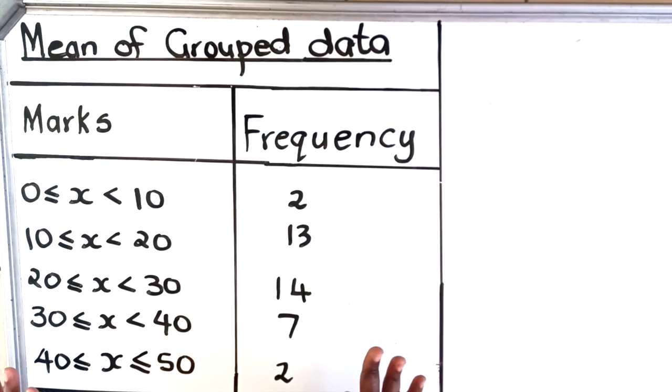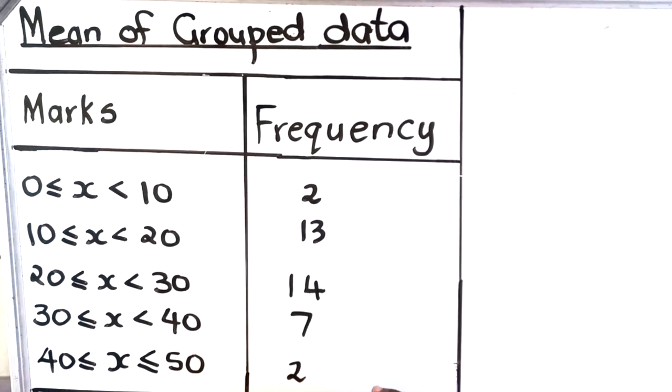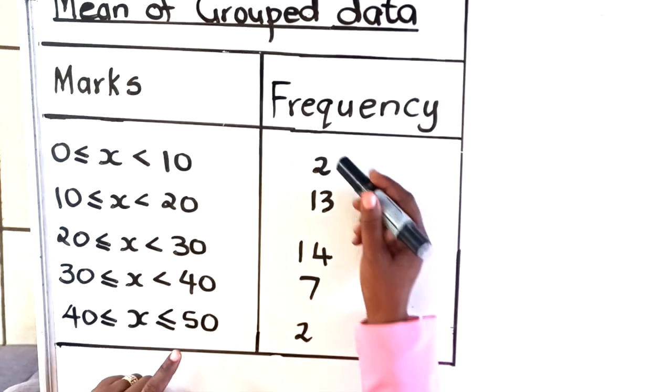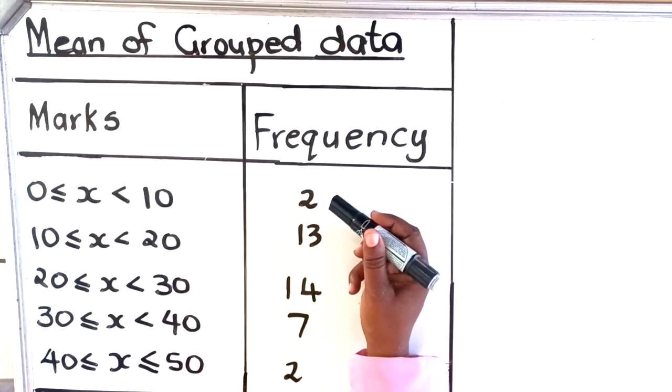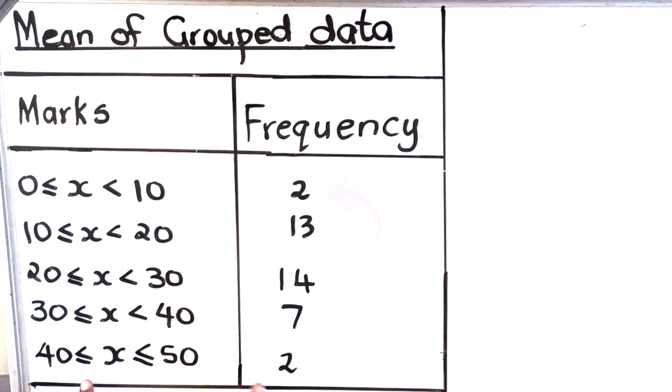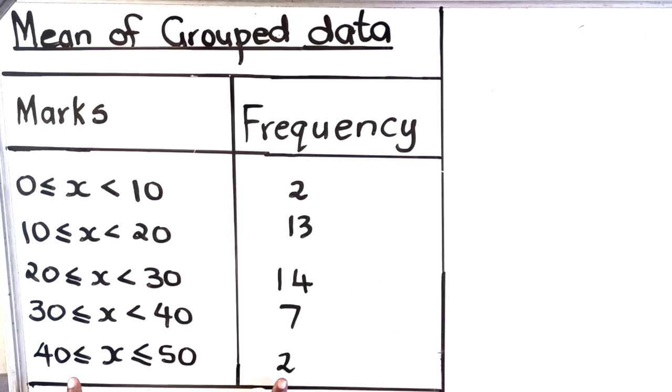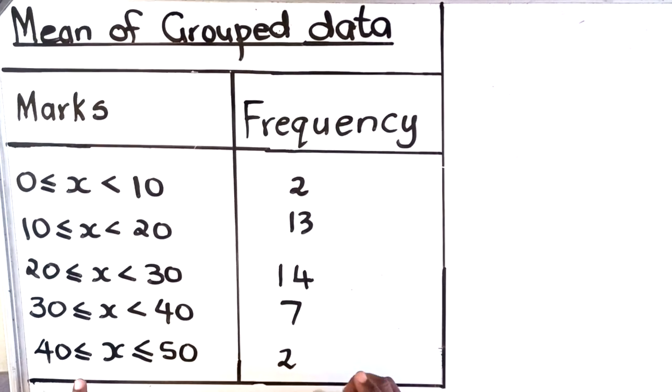This is data for a test that learners wrote. The test was out of 50. The frequency shows how many learners got from 0 to 10, and so on. You can tell this was a maths test because when you look at the highest one, only two learners got from 40 to 50. So definitely it was maths, but this is a good class when you look at their marks.